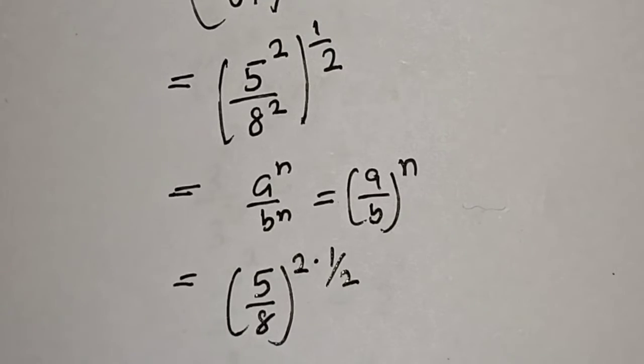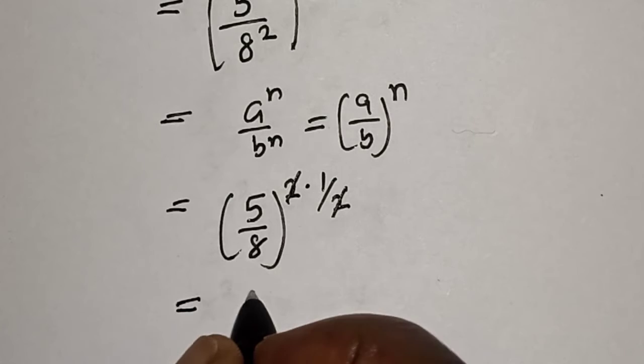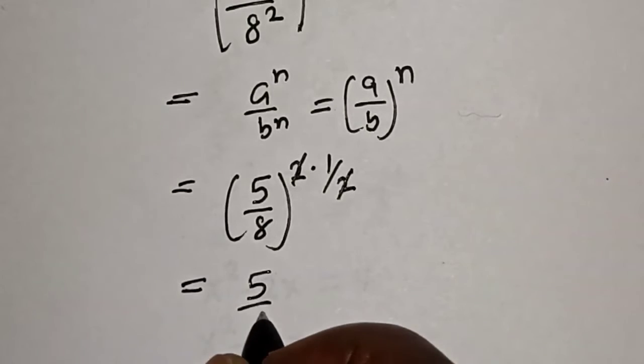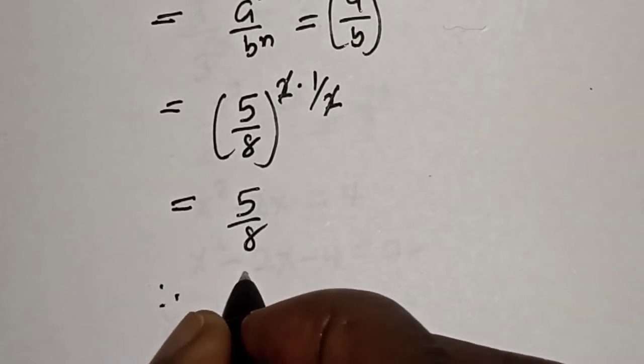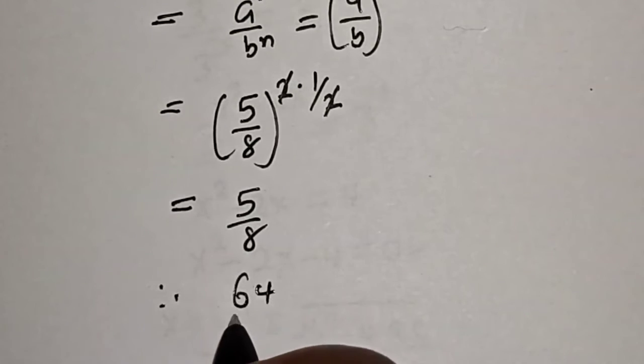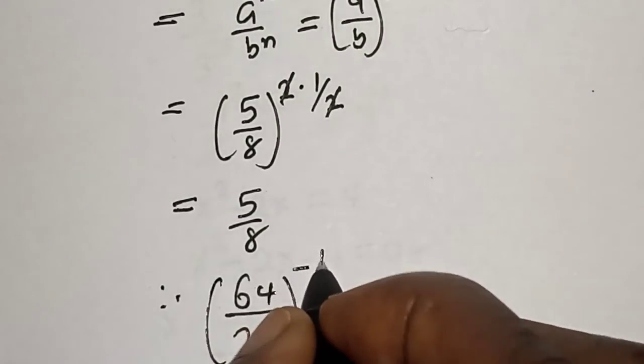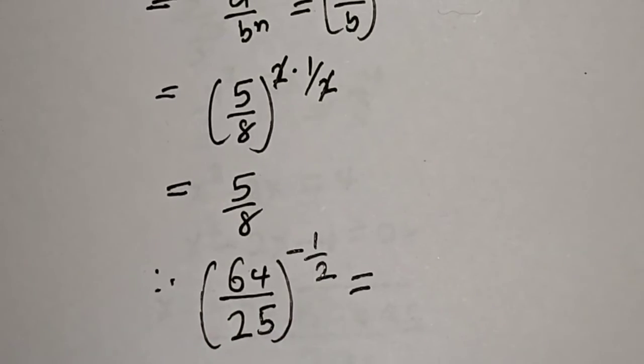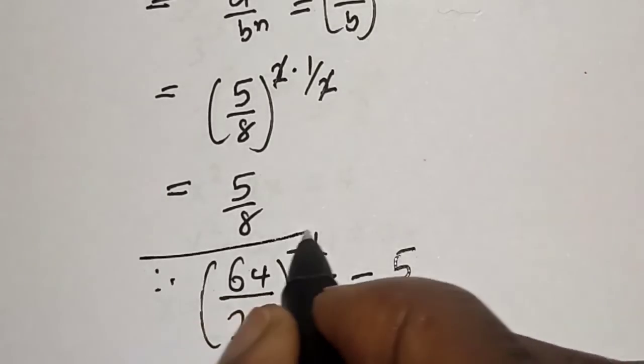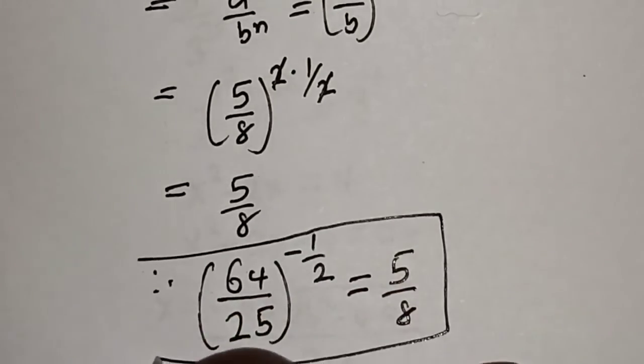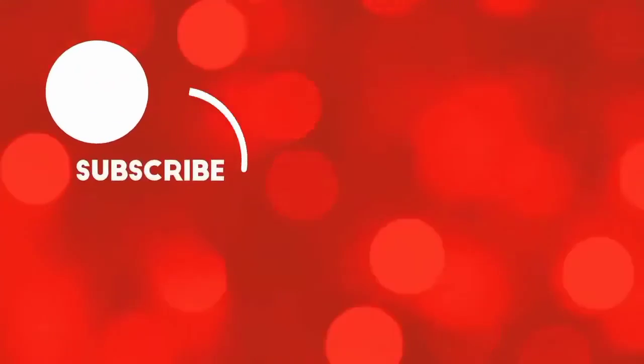And this one will cancel, so this is equal to 5/8. Therefore, 64 divided by 25 to the power of minus 1/2 is equal to 5/8. That is our final answer. If you enjoyed the class, please don't forget to like, share, comment, and subscribe. Thank you.